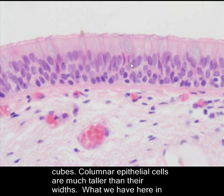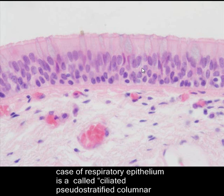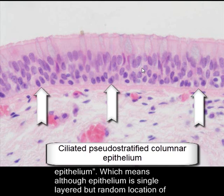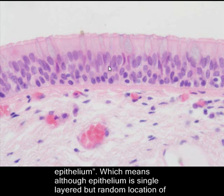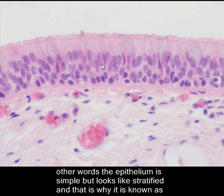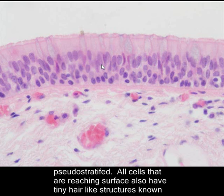Columnar epithelial cells are much taller than their width. What we have here in the case of respiratory epithelium is called ciliated pseudo-stratified columnar epithelium, which means although the epithelium is single-layered, the random location of the nuclei in these cells deceptively makes it look like a stratified epithelium. It is simple but looks stratified — that is why it is known as pseudo-stratified.